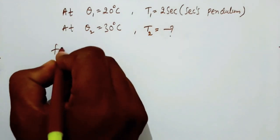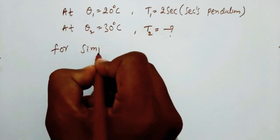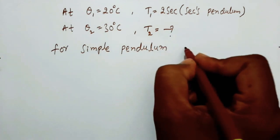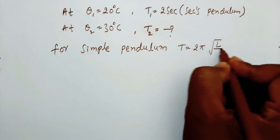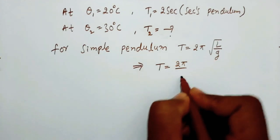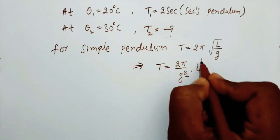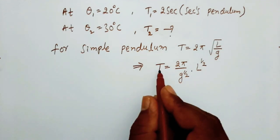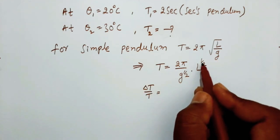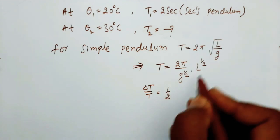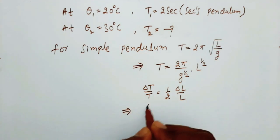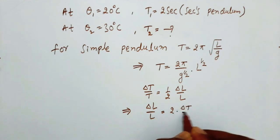For a simple pendulum, T is equal to 2π times the square root of L over G. Taking the relative error in time period, we get delta T over T equals one-half times delta L over L. From this we can write delta L over L is equal to 2 times delta T over T. Let us call this equation 1.